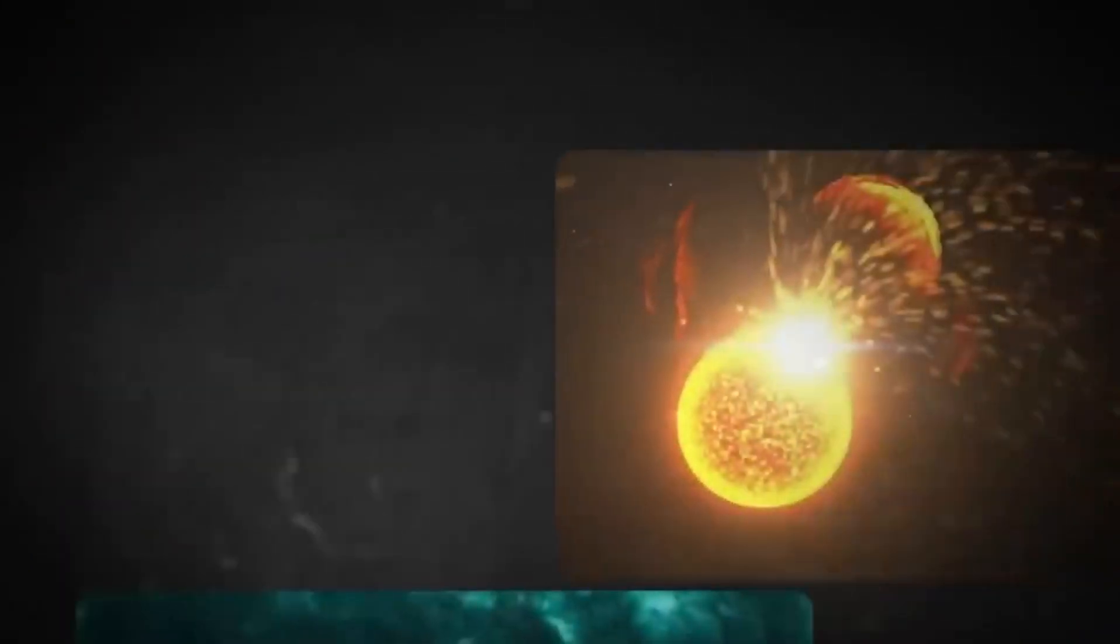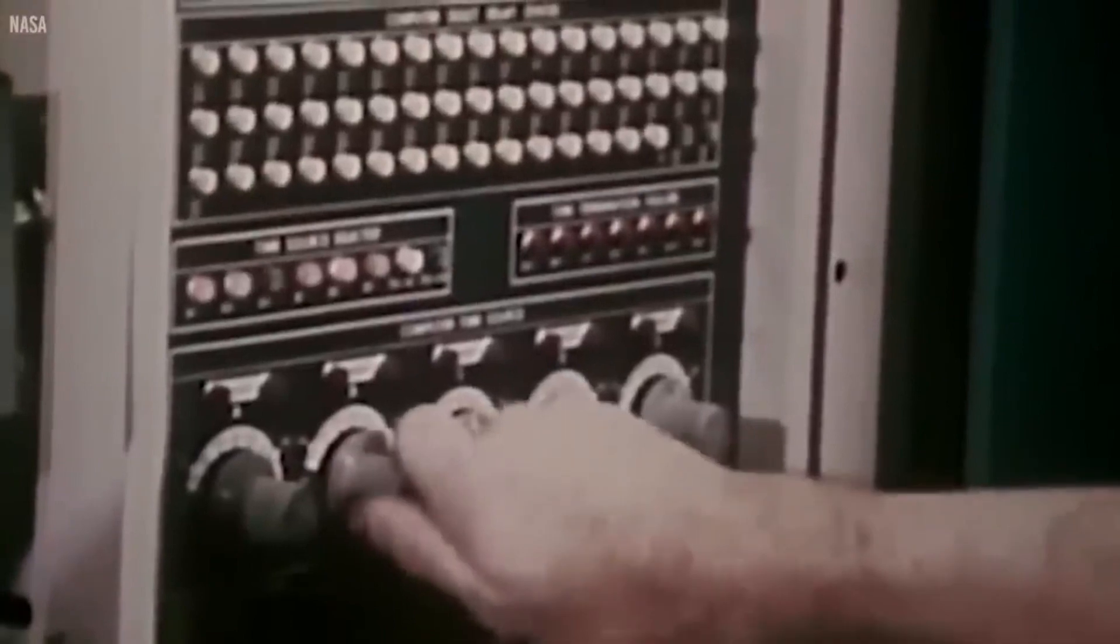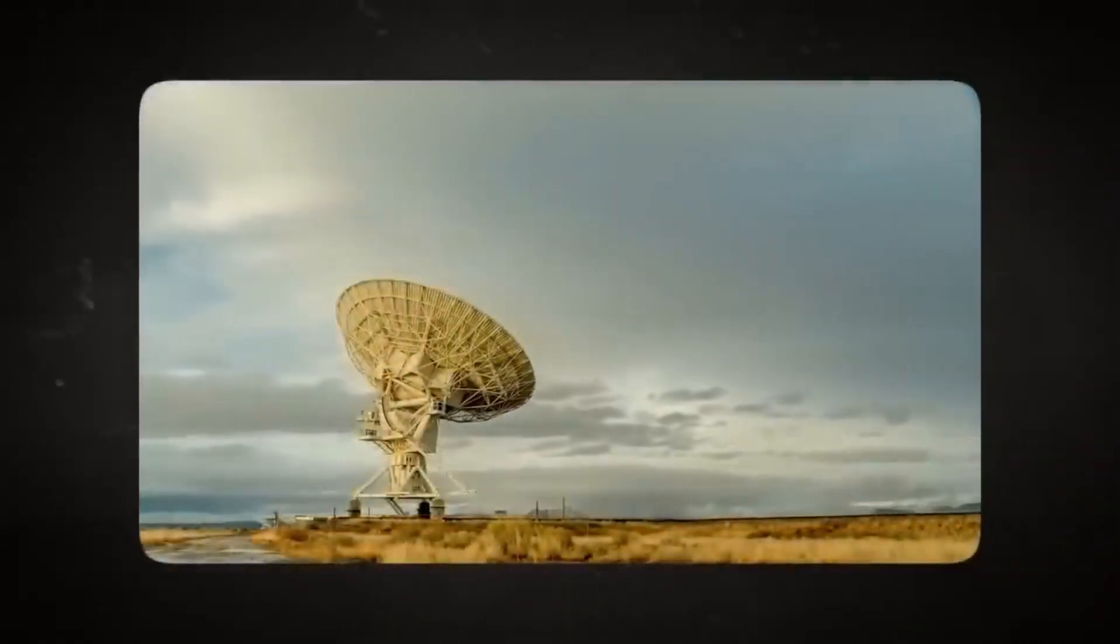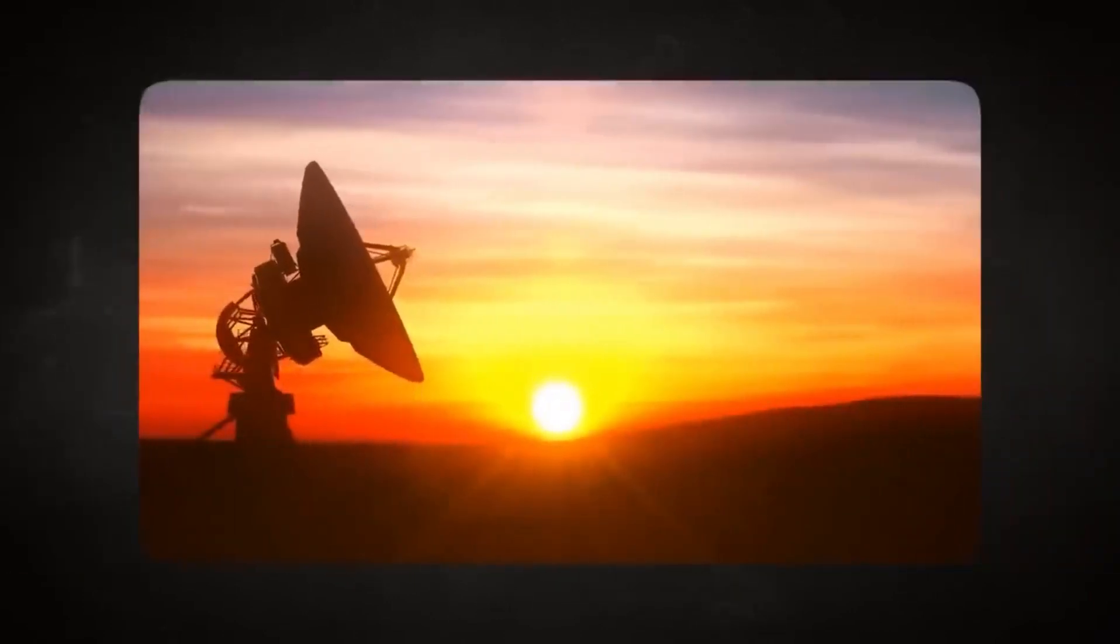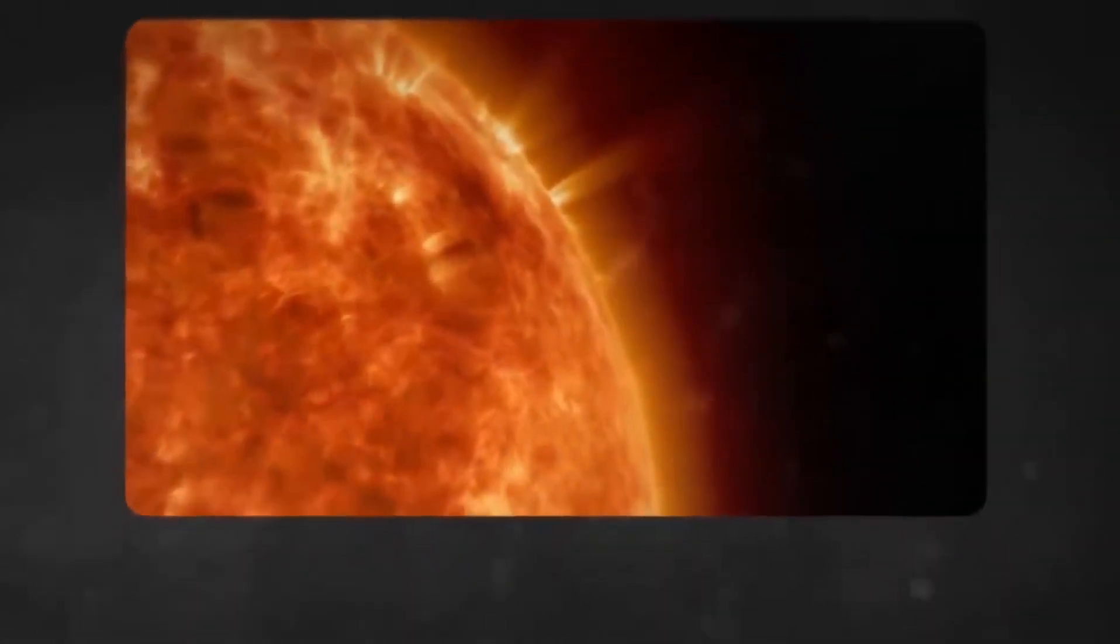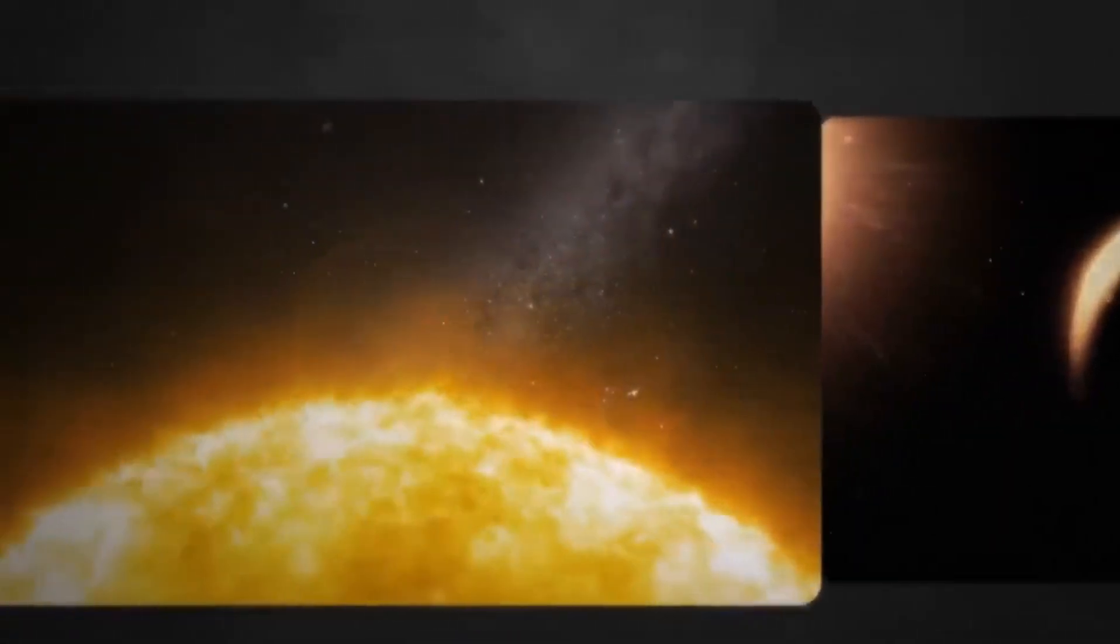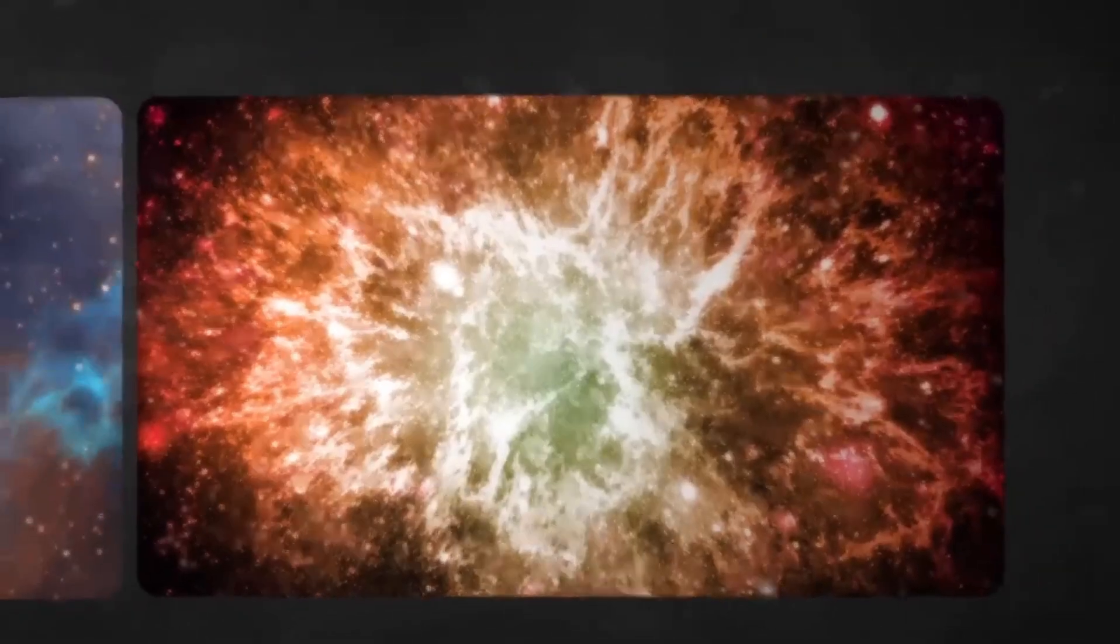In 1977, when Voyager probes were launched, NASA did something unique. Instead of just equipping them with instruments for observation, they included pre-recorded information on a special golden disk attached to Voyager 1. The disk contains recordings of natural sounds, songs from various cultures, greetings in different languages, and images encoded with a special code, a message representing Earth for potential encounters with extraterrestrial life.